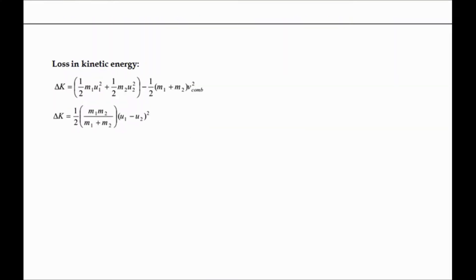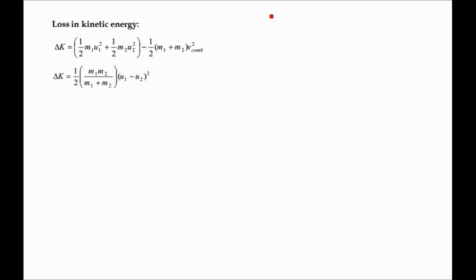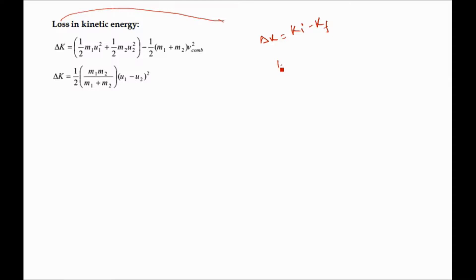Now we calculate the loss of kinetic energy. The loss ΔK = K_i − K_f. The initial kinetic energy is the kinetic energy of the first body, which is (1/2)·m1·u1², plus the kinetic energy of the second body, which is (1/2)·m2·u2².